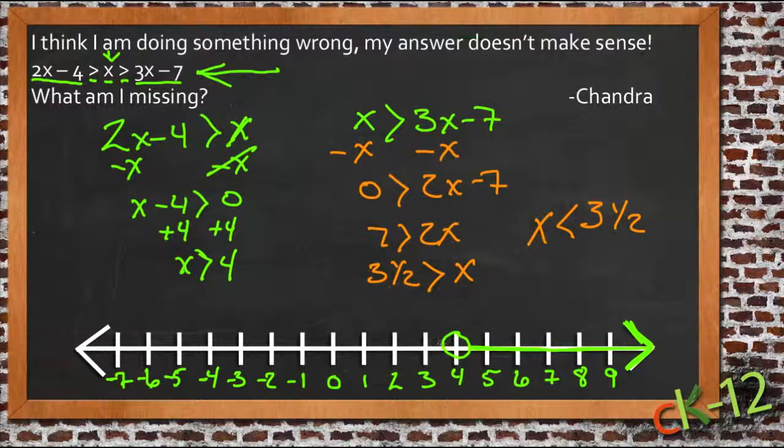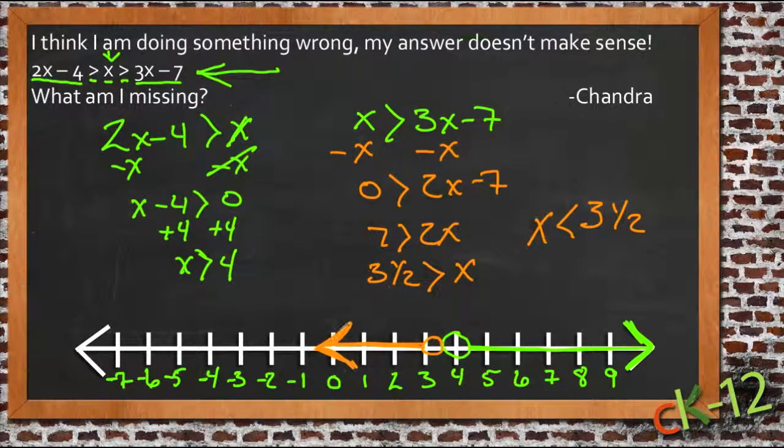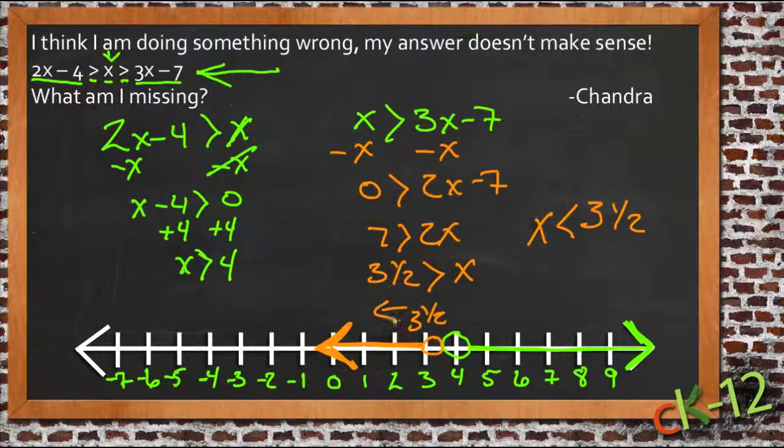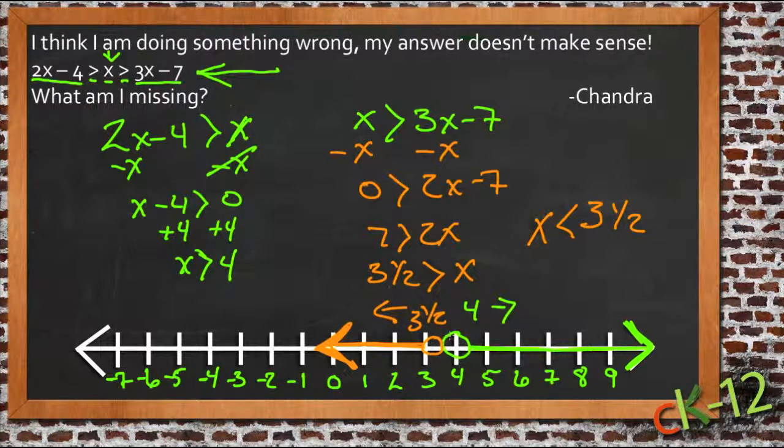So this inequality is talking about numbers that start at 3.5 right here, although the 3.5 is not included, and then it's shaded to the left. So our orange side, this part of our inequality, starts at 3.5 and goes this way, and our green side starts at 4 and goes this way.